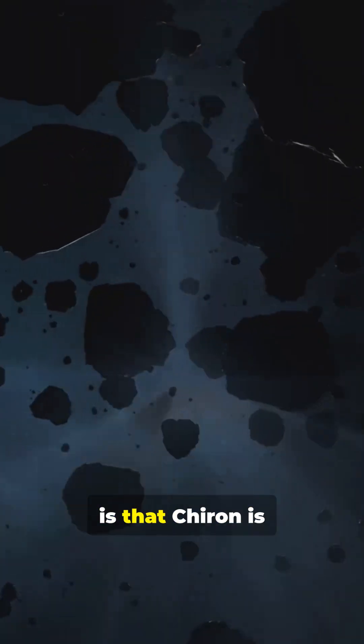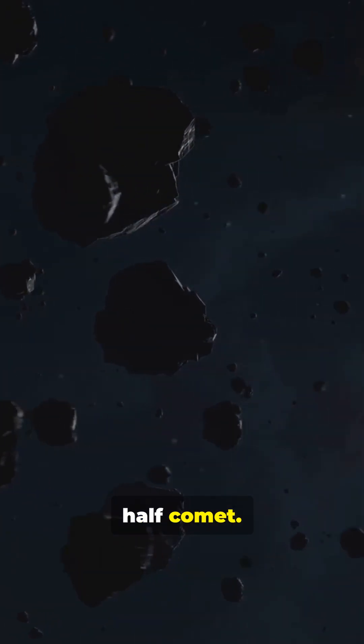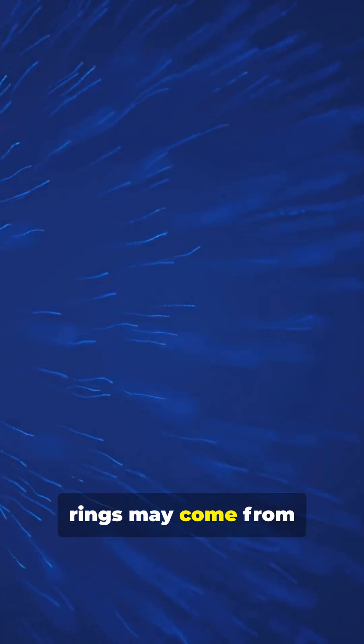What makes it wilder is that Chiron is also a centaur, half asteroid, half comet. That means its rings may come from icy material blown off its own surface.